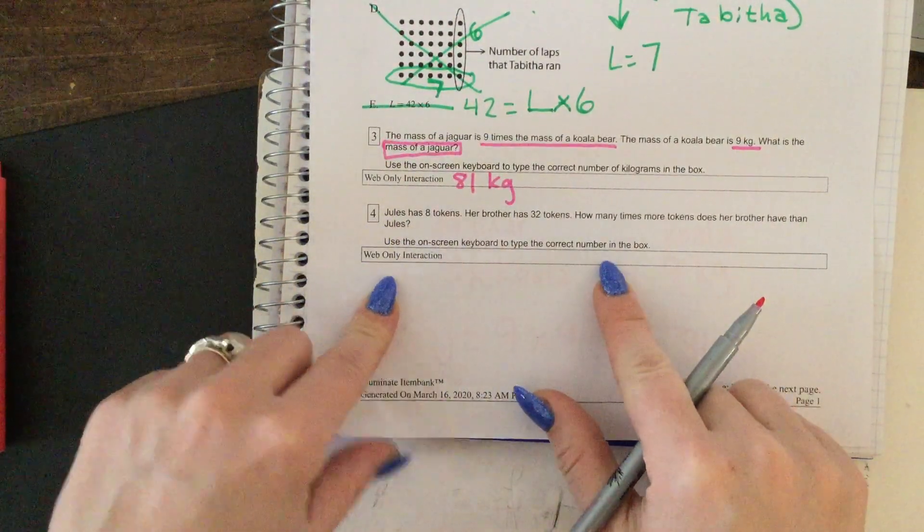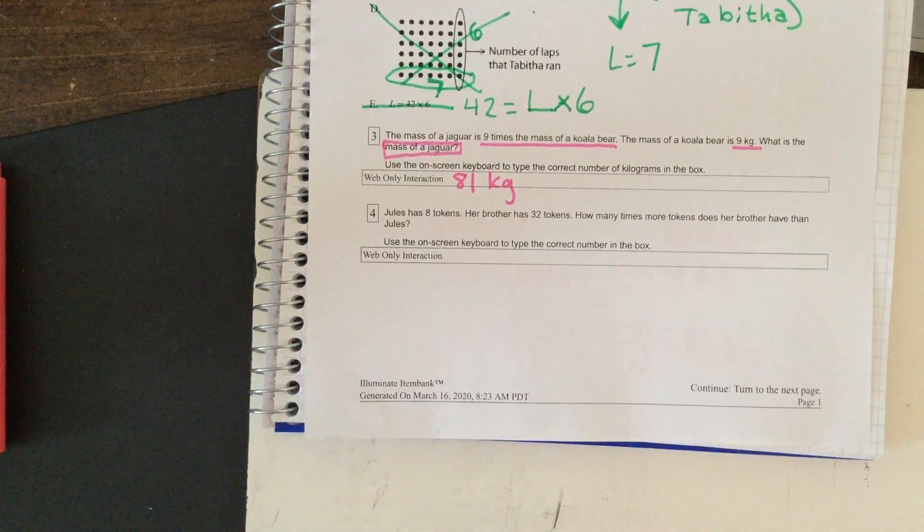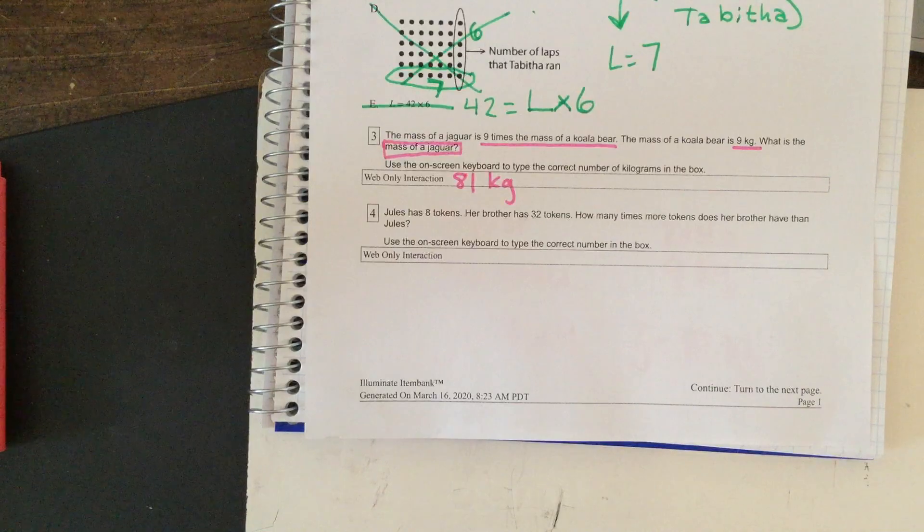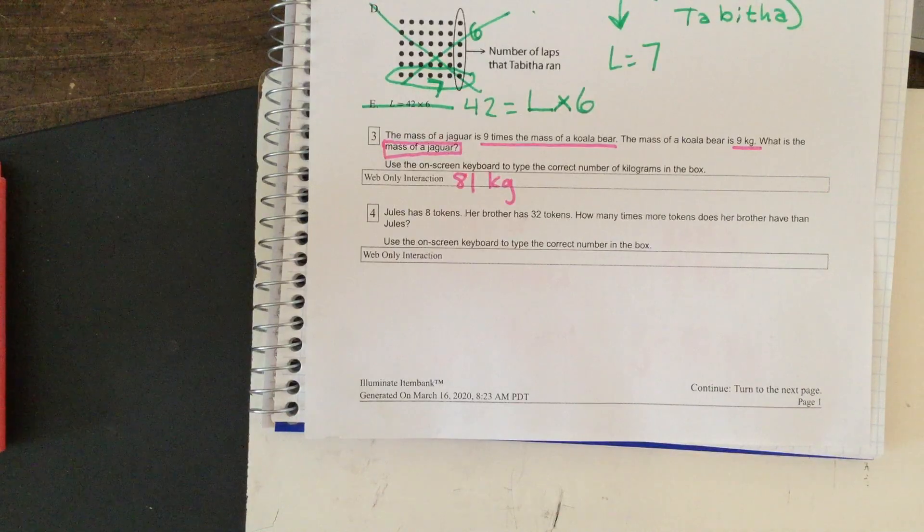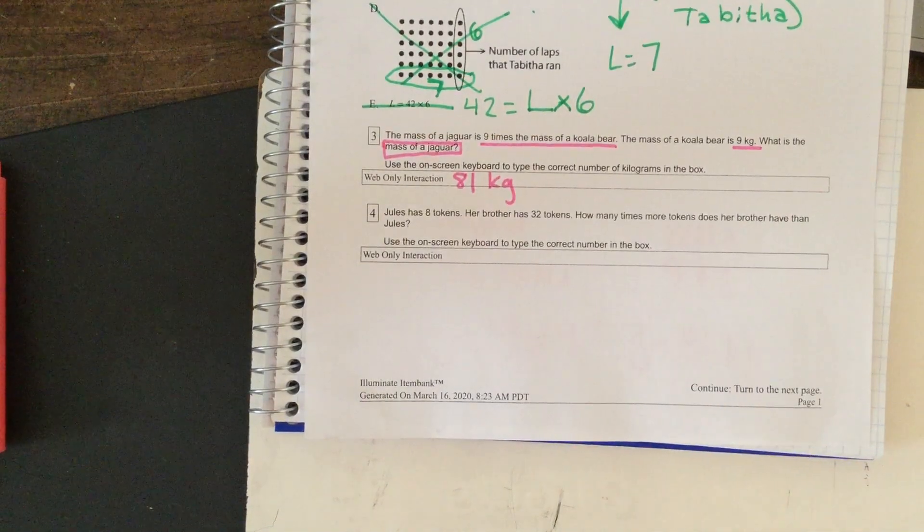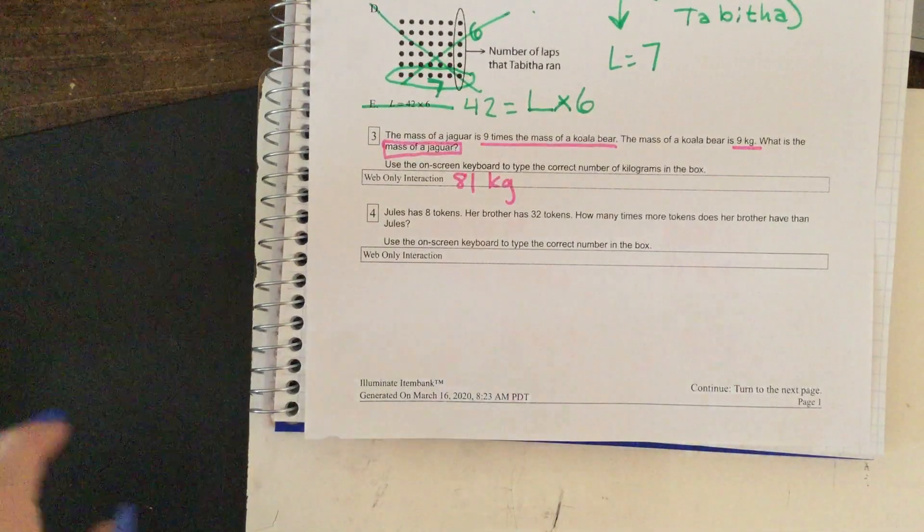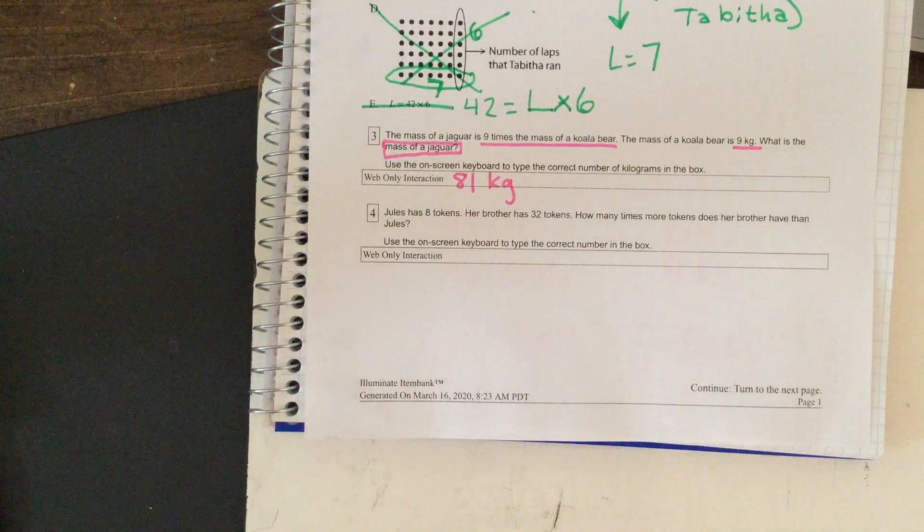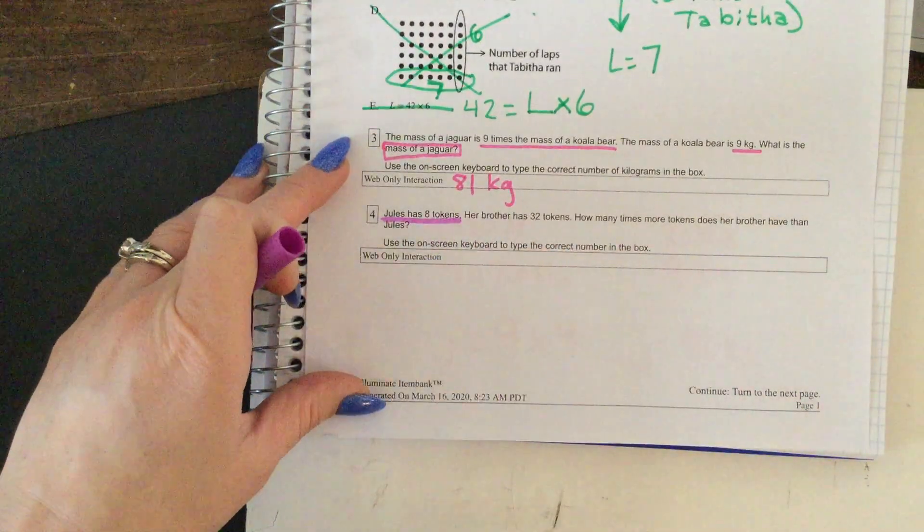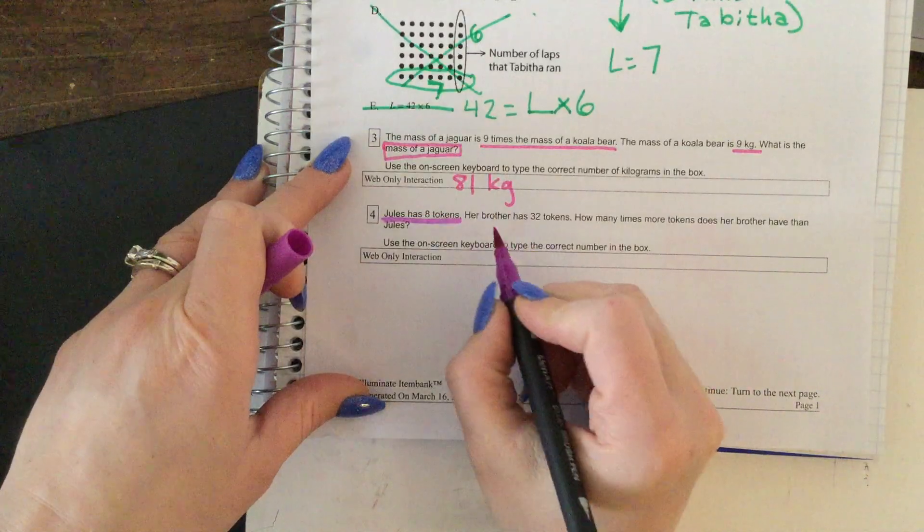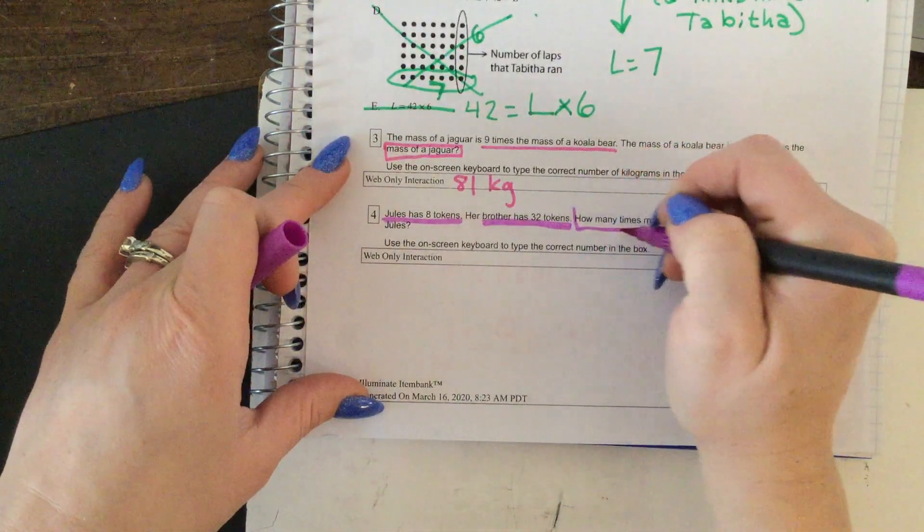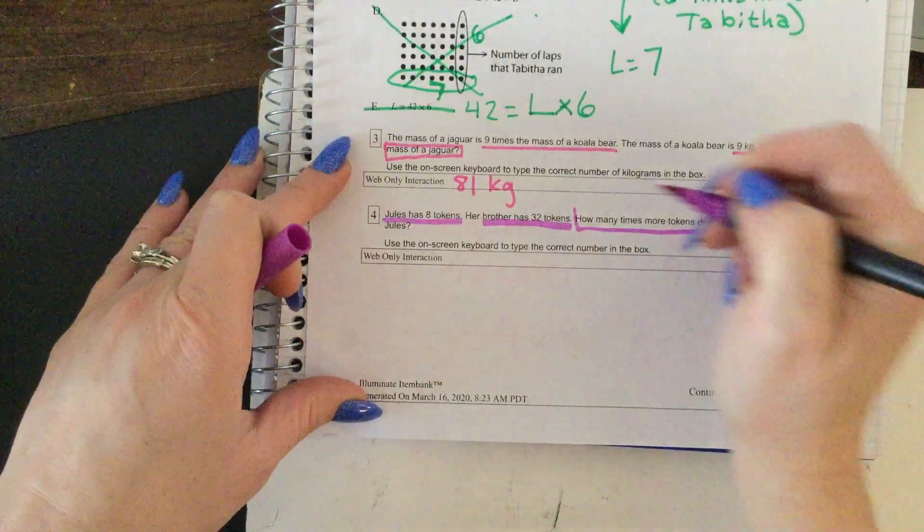All right friends, one more and then I'm gonna let you guys work on the rest at home with your families. Jules has eight tokens, her brother has 32 tokens. How many times more tokens does her brother have than Jules? So here's what we know: Jules has eight tokens, her brother has 32 tokens. Here's what we got to figure out - how many times more tokens does her brother have than Jules.